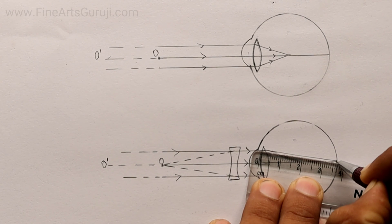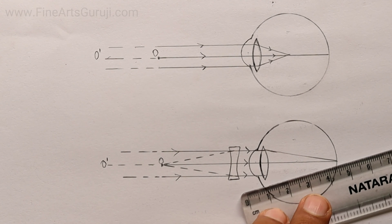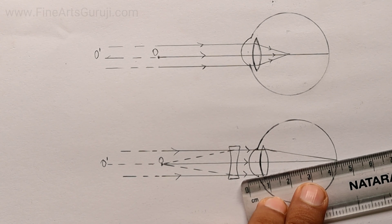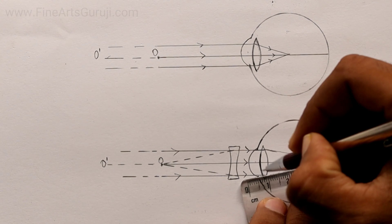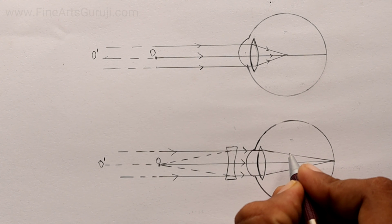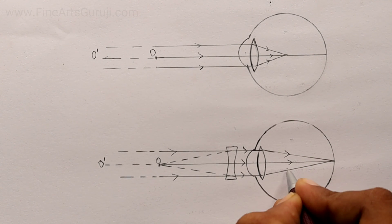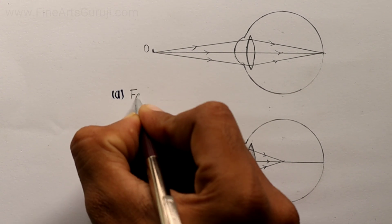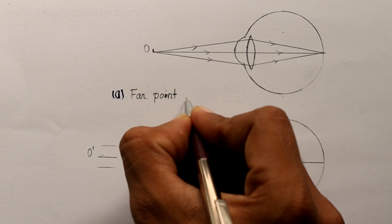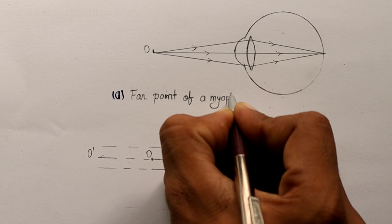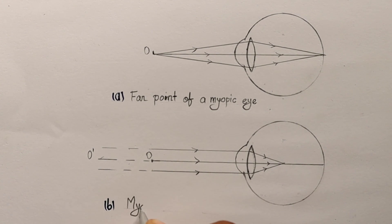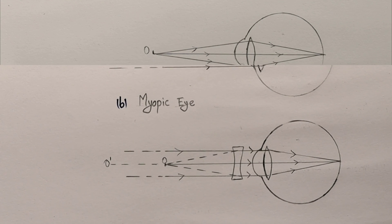We have to draw it and make it reach the retina. I hope this video helps you to draw this diagram neatly and cleanly. After drawing the correction for myopia, we draw the rays going to the retina. Now we label: the first diagram is the far point of the myopic eye, the second is the myopic eye, and the third shows the correction for myopia.